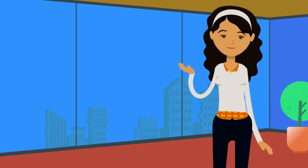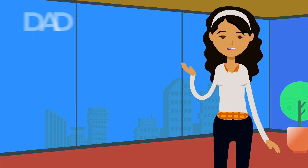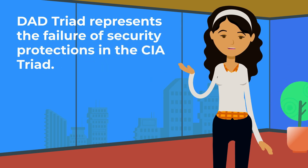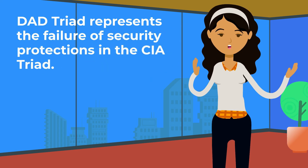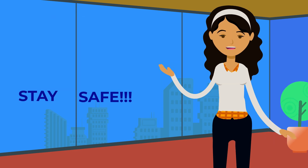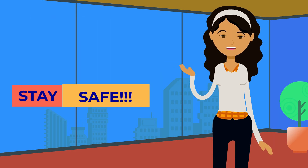And now, we can say that the DAD Triad represents the failure of security protections in the SEA Triad. Stay safe!